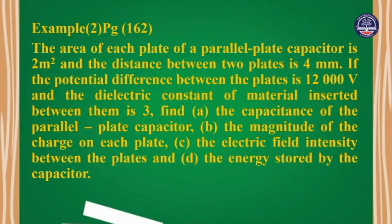Consider a parallel plate capacitor where the area of each plate is 2 square meters and the distance between the two plates is 4 mm. The potential difference between the plates is 2,000 V.